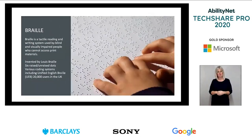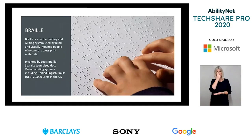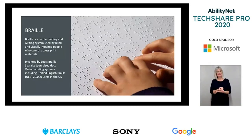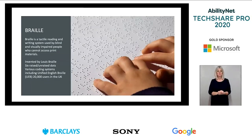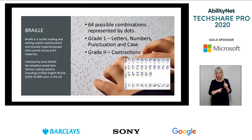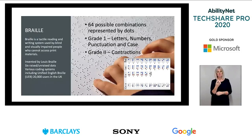Braille is a tactile reading system used by people who are visually impaired. It can be embossed on paper, or alternatively it can be read using refreshable Braille displays. A full Braille cell includes six raised dots, arranged in two columns, each column having three dots, with the number and arrangement of the dots distinguishing one character from another. There are 64 possible combinations, including no dots, representing a space between words. Unified English Braille, UEB, is a Braille code developed by the International Council on English Braille.